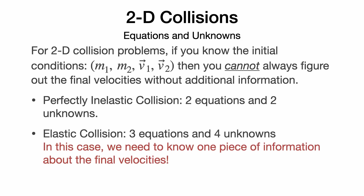For two-dimensional collision problems, knowing the initial conditions does not always allow us to determine the final velocities without additional information. For perfectly inelastic collisions, conservation of momentum is a vector equation that yields two independent equations for the two components of the final velocity — two equations and two unknowns, which can be solved. For elastic collisions in 2D, we have three equations and four unknowns: the momentum equation splits into two scalar equations, and kinetic energy provides only one scalar equation, so additional information about the final velocities is required.